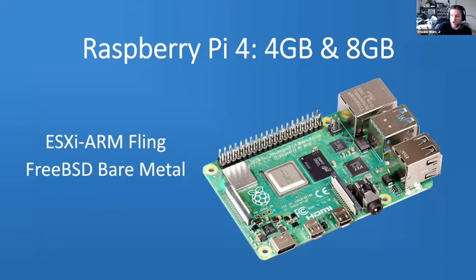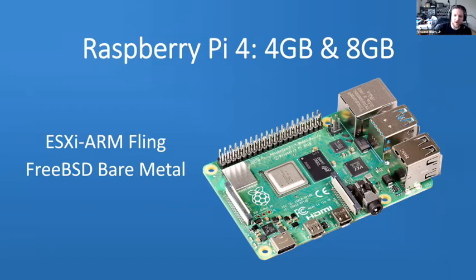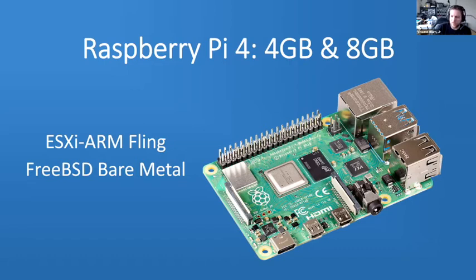Software is useless without hardware, so here's the hardware I've been testing with. The Raspberry Pi 4 was one of the primary targets for ESXi ARM Fling — they wanted to get it into the hands of hobbyists and consumers as quickly as possible, and it's by far the easiest ARM system to get your hands on. For ARM Fling specifically it requires either the 4 GB or 8 GB model, because the hypervisor takes just over 1 GB of RAM.